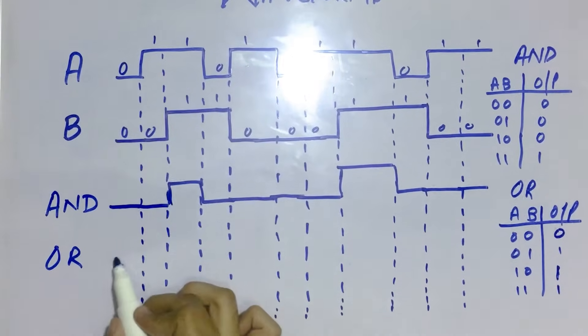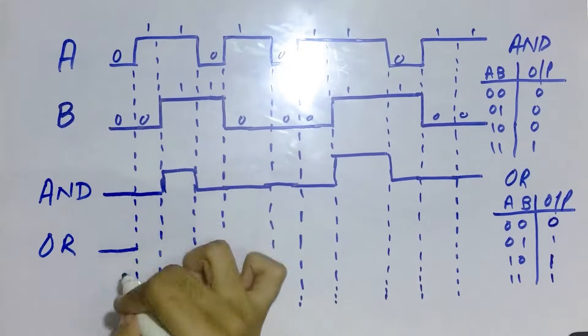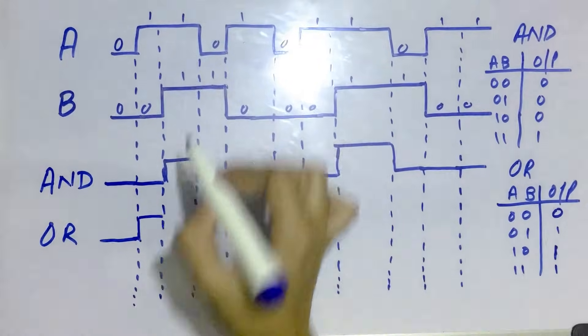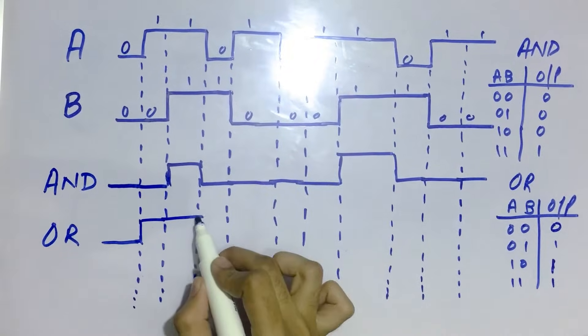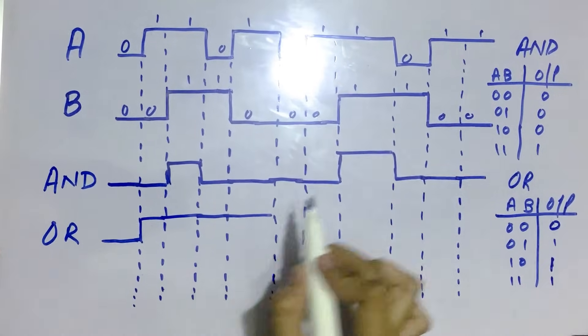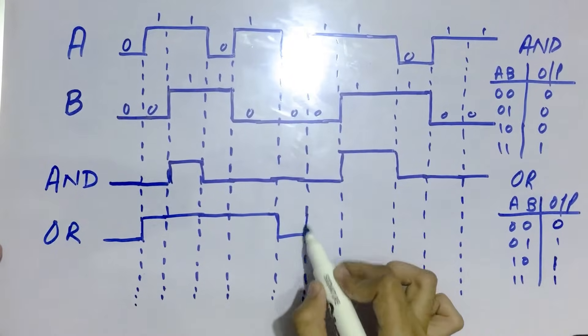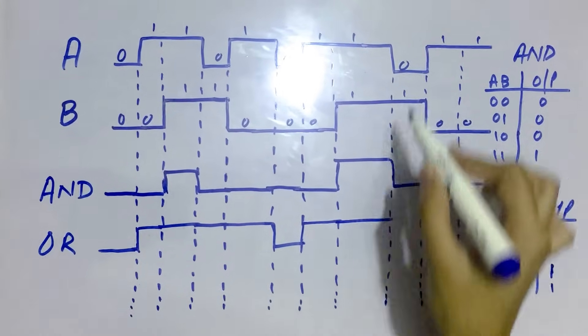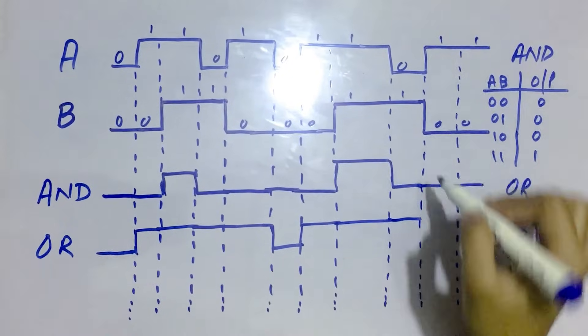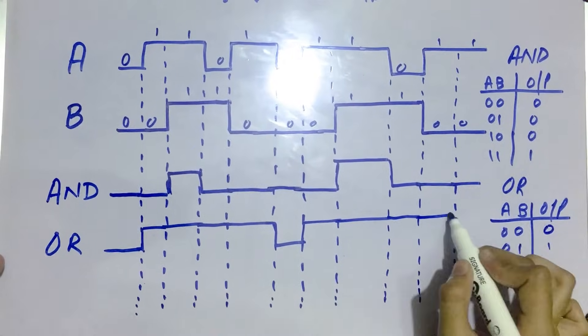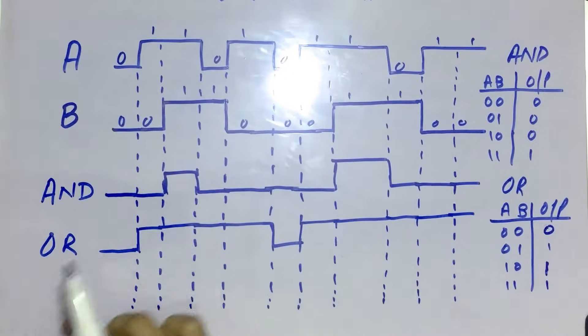Now we have 0 and 0, so the waveform is 0. Then 1 and 0 is 1, 1 and 1 is 1, 1 and 0 is 1, 0 and 1 is 1, 1 and 0 is 1, 1 and 1 is 1, 0 and 1 is 1, and 1 and 0 is 1. These are the waveforms of AND and OR.